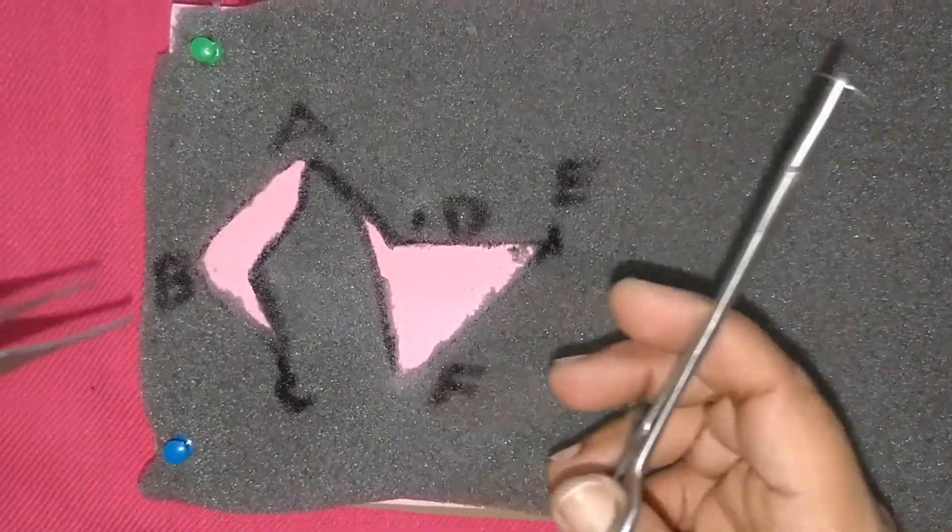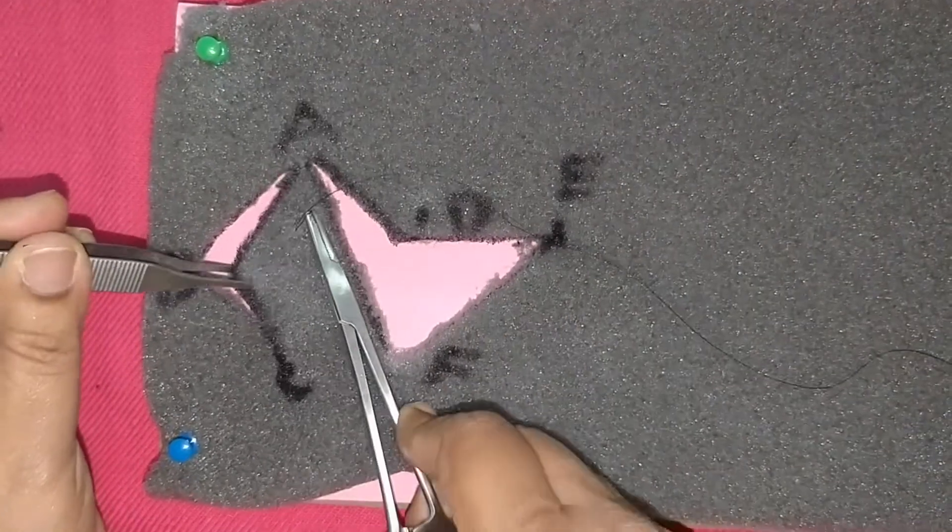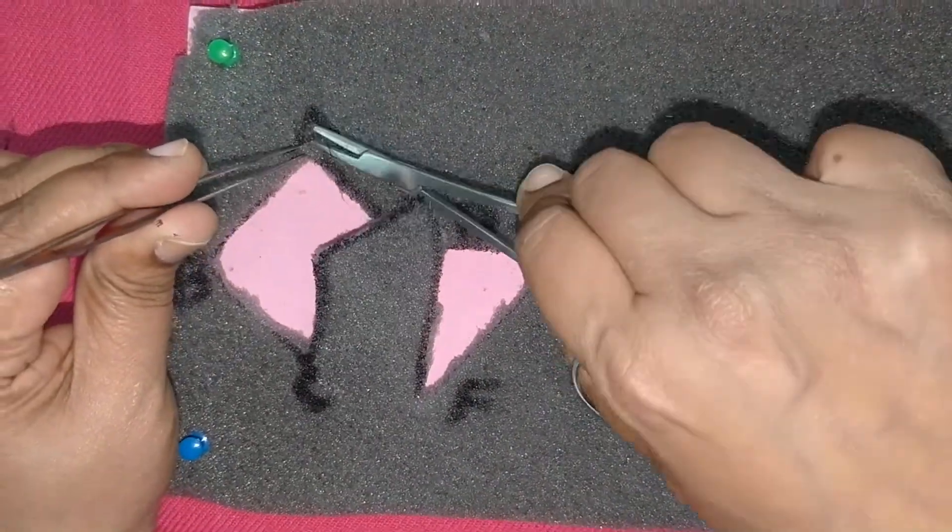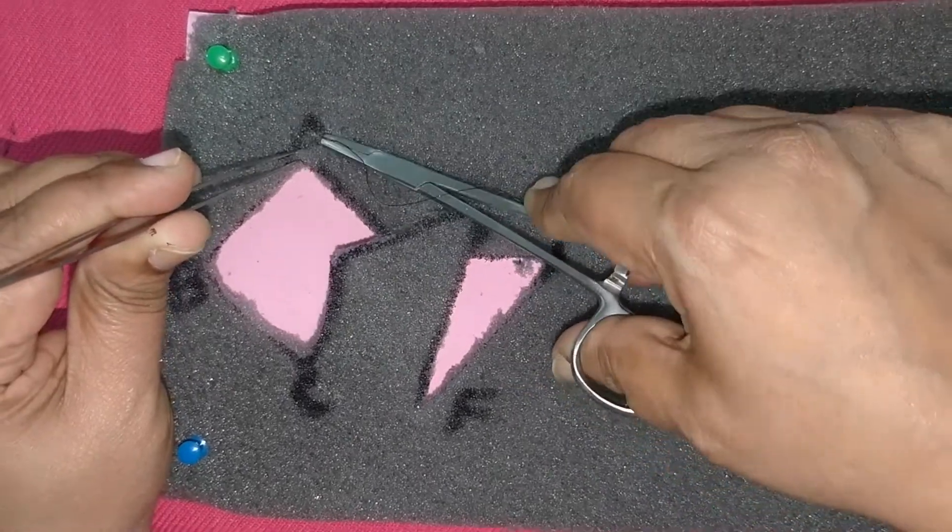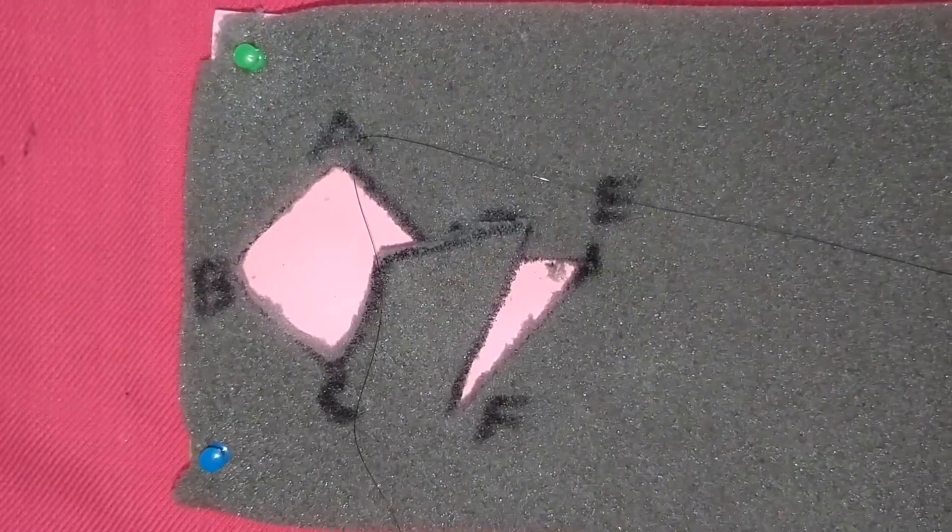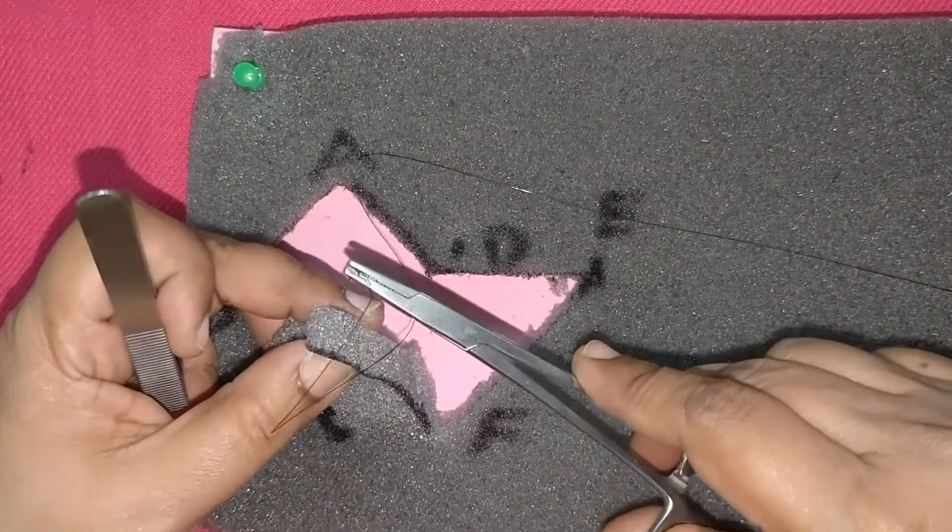Now this is how it will be sutured. Here the rhomboid flap is a modified transposition flap where the donor site is closed primarily as opposed to the regular transposition flap where the donor site is closed with a skin graft.